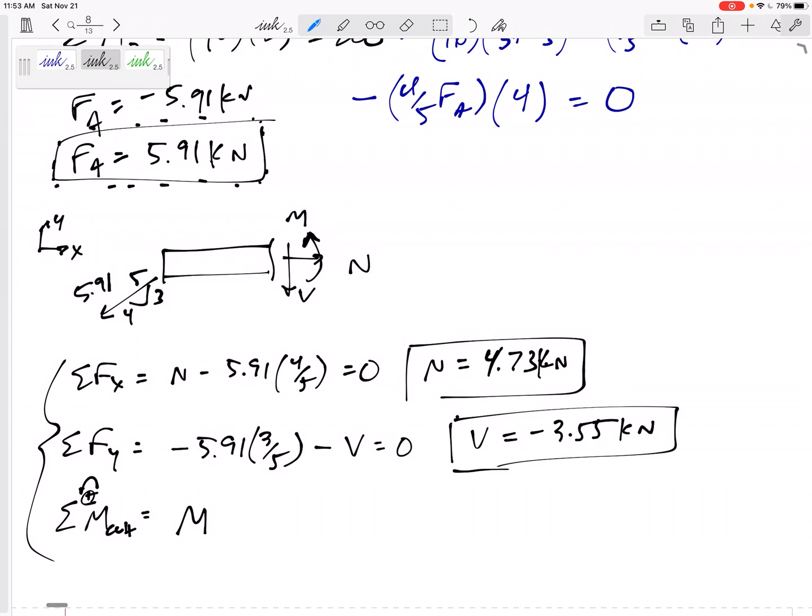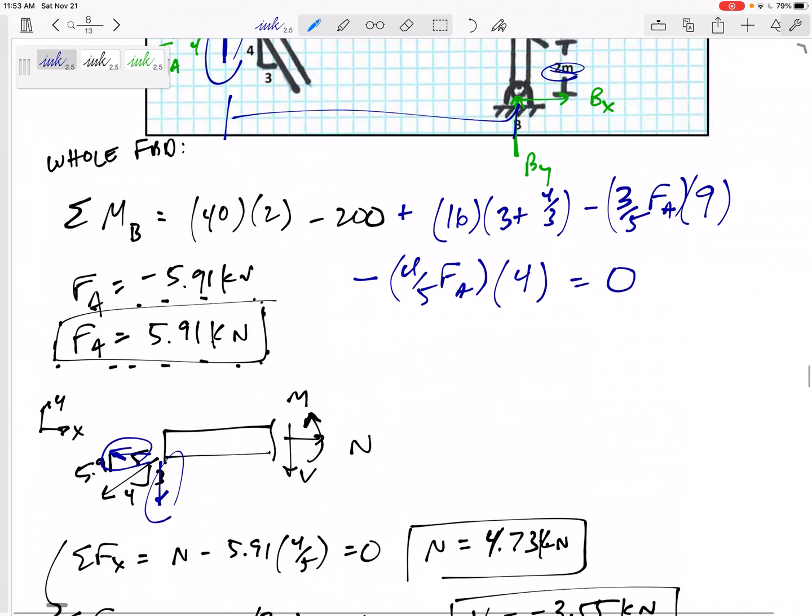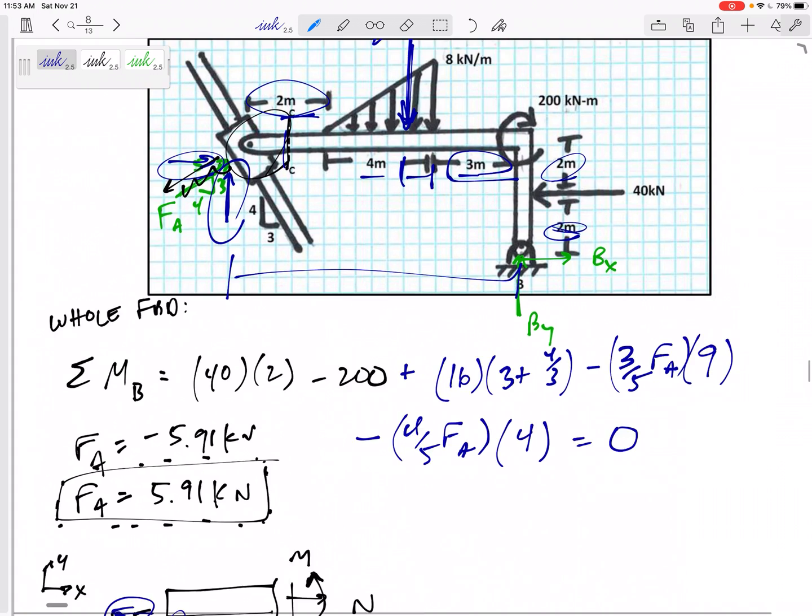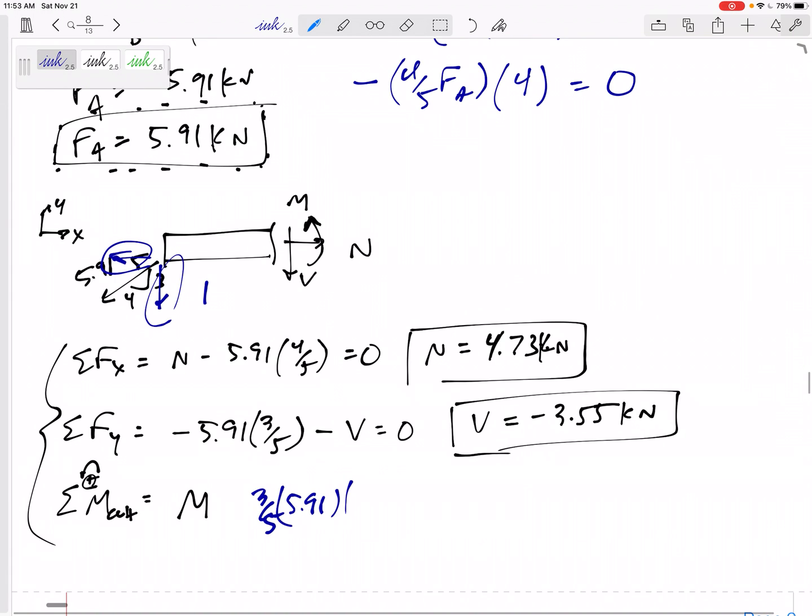And then this, let's see, the four-fifths component would go straight through it. But this one right here, the three-fifths of 5.91, three-fifths of 5.91 is acting this distance. I didn't draw the distance here. But it is halfway or is one meter. One meter right here. It is one meter away. And it is a positive moment. Set this equal to zero.